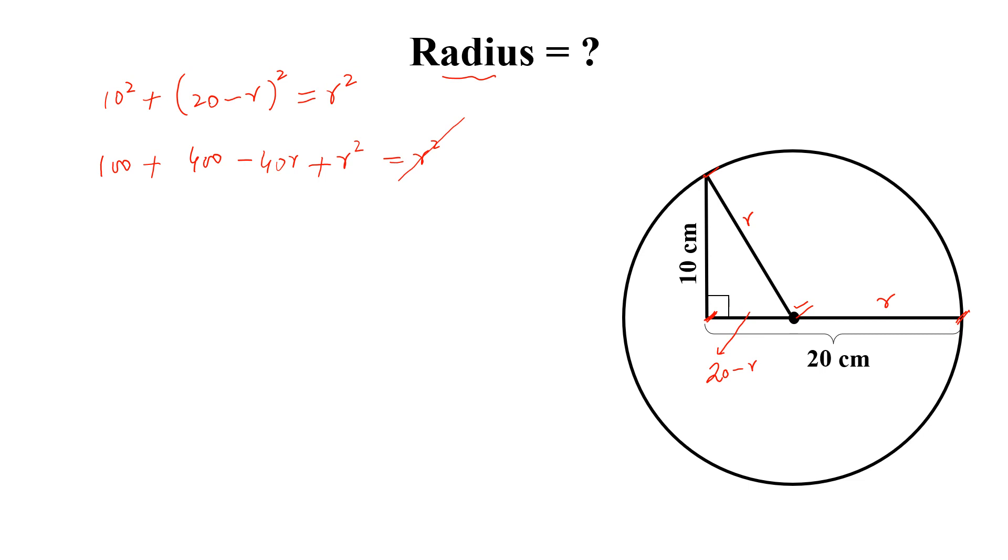This r square is cancelled with this r square and simplify this, we will get 40r equal to 500, dividing both sides by 40, we get 25 by 2 and 25 by 2 is equal to 12.5 cm.